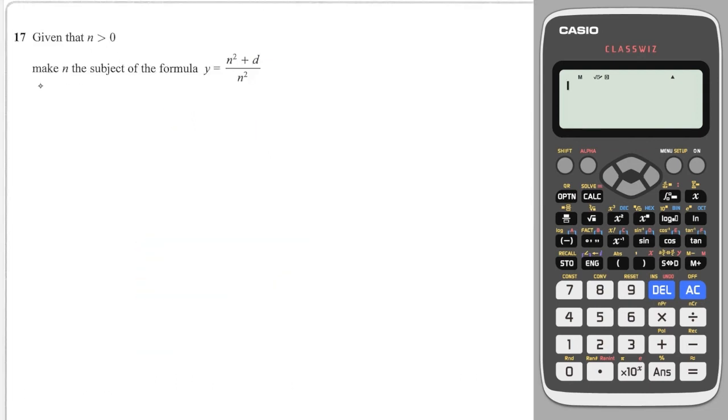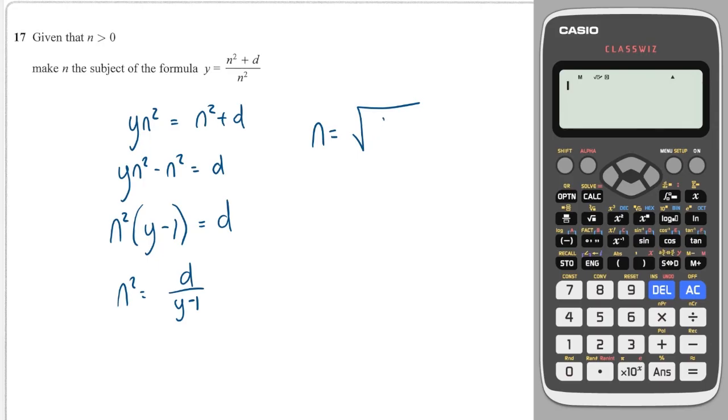This question says, given that N is greater than 0, so we're going to make N the subject of this formula. So it kind of looks hard, but essentially we're going to do exactly the same thing. Multiply the N squared up to the other side like that. And then subtract the N squared over so that you have N on both sides, so the terms that have N in it are on the same side. And then you can factorize out an N squared to get Y minus 1 is equal to D. And then you can divide through by that factor, so I get D over Y minus 1. And then the last step is to square root. So I get N is equal to square root of D over Y minus 1. And normally when we square root we would write a plus or minus sign, but because we're told that N is greater than 0, we don't need a minus. So the answer is just the square root of positive.